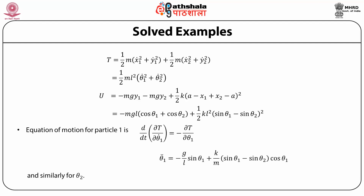The equation of motion for particle 1 is d/dt(∂T/∂theta-1-dot) = −∂T/∂theta-1 + (k/m) sin(theta-1) − sin(theta-2) multiplied by cos(theta-1), and we have a similar equation for theta-2. These equations for theta-1 and theta-2 are not easy to solve in general, but for small oscillations they can be solved without much difficulty.